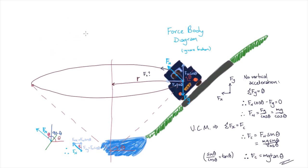If we want to find the velocity of the car, we can plug in our uniform circular motion equation, and find that the velocity is equal to the square root of Rg tan theta.